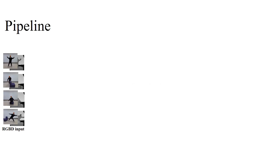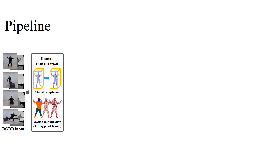As for the pipeline, our approach takes an RGBD video from a Kinect camera as input. First, we generate a complete initial model and initialize the non-rigid motion for the human to eliminate the tedious self-scanning constraint.